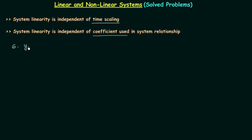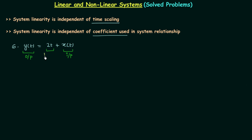In this problem the relationship is: y(t) = 2t + x(t). Here y(t) is the output of the system, x(t) is the input of the system, and this 2t is the added term. If you look closely, you will find it is time dependent.